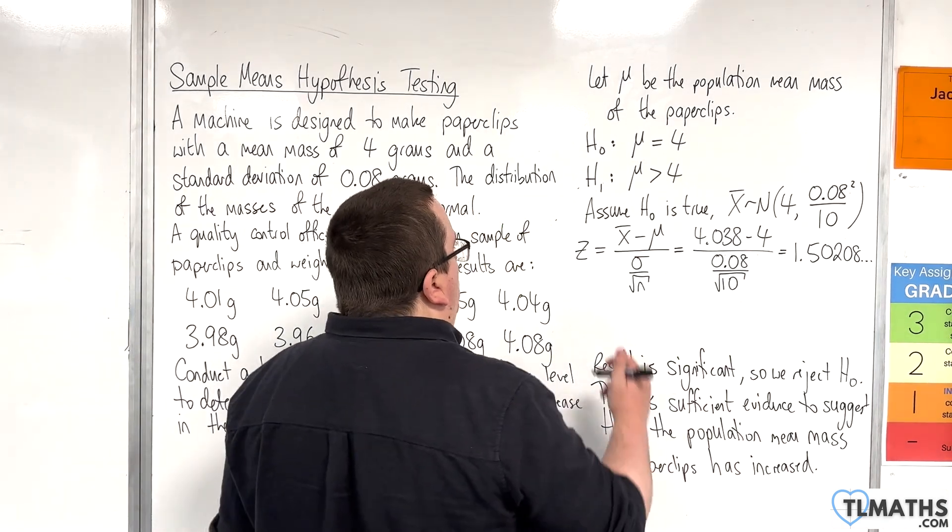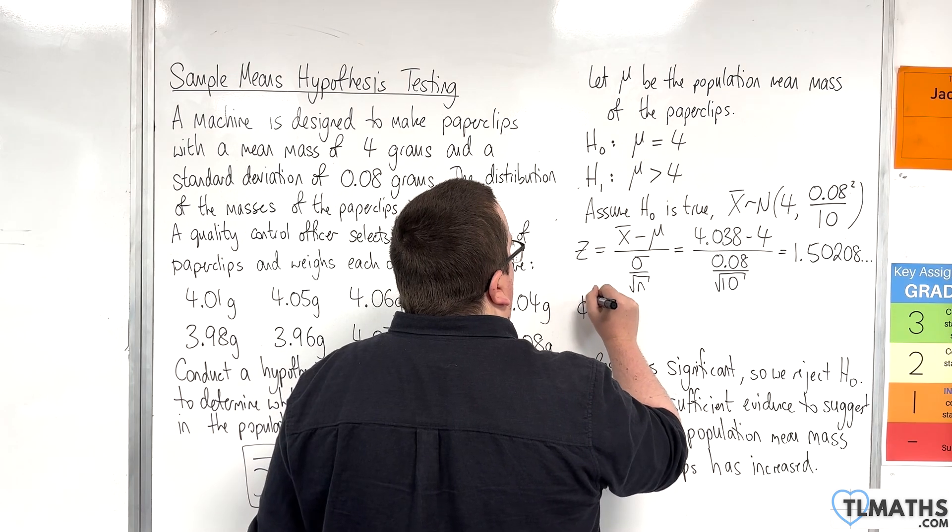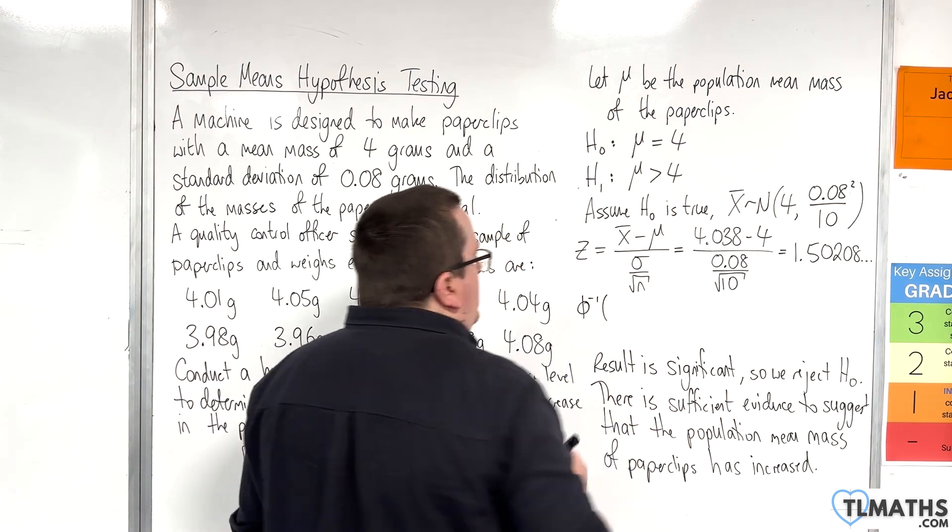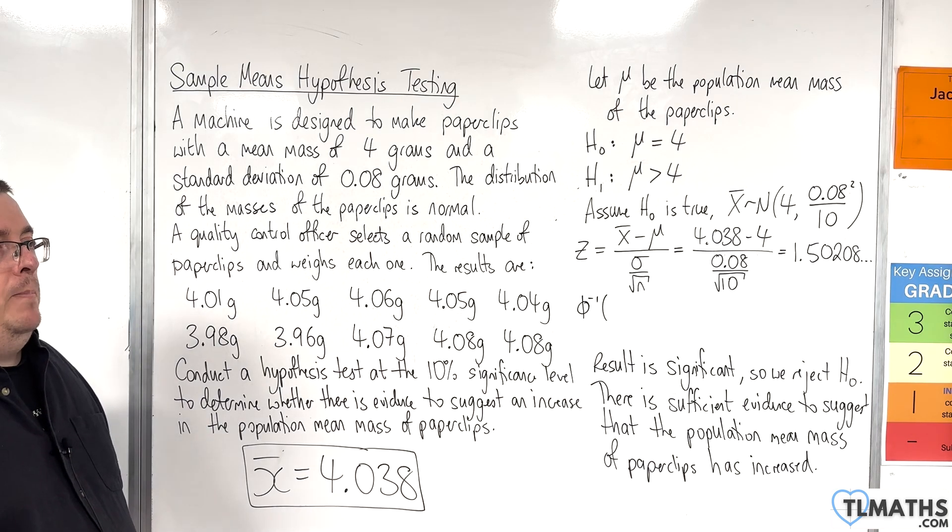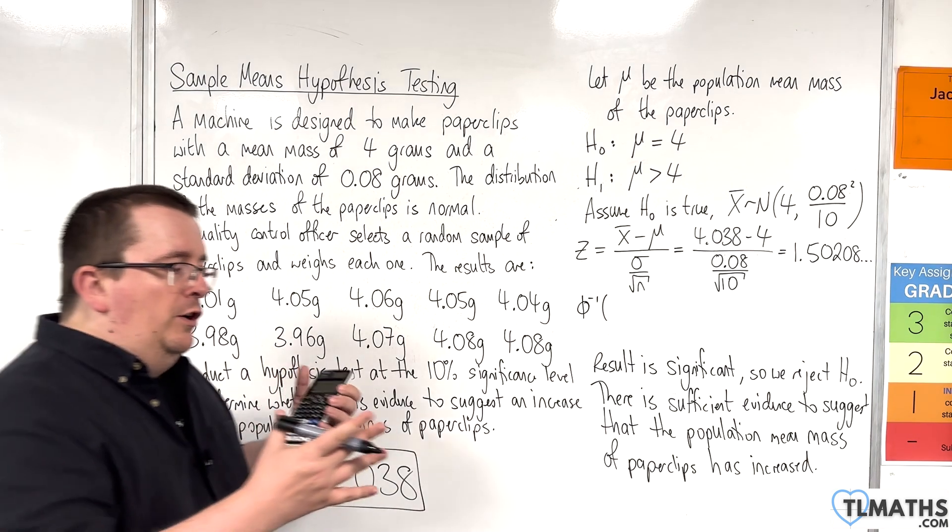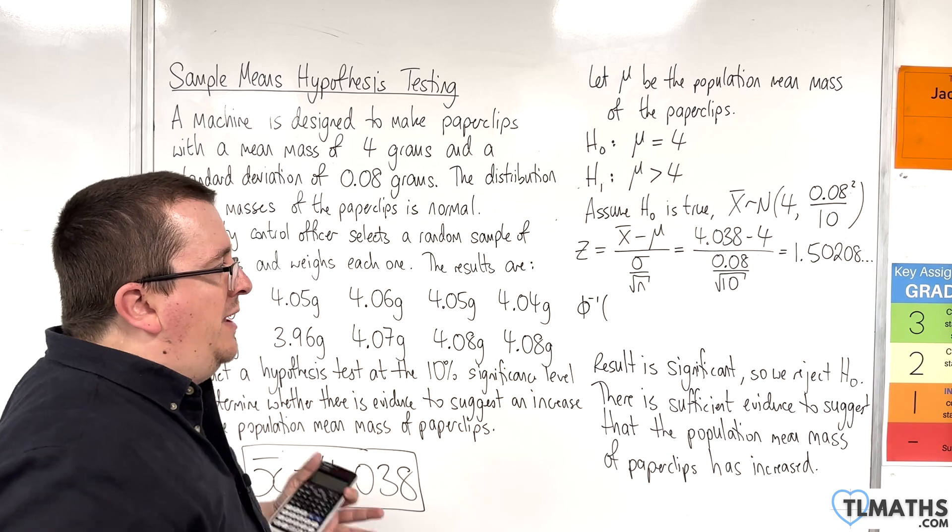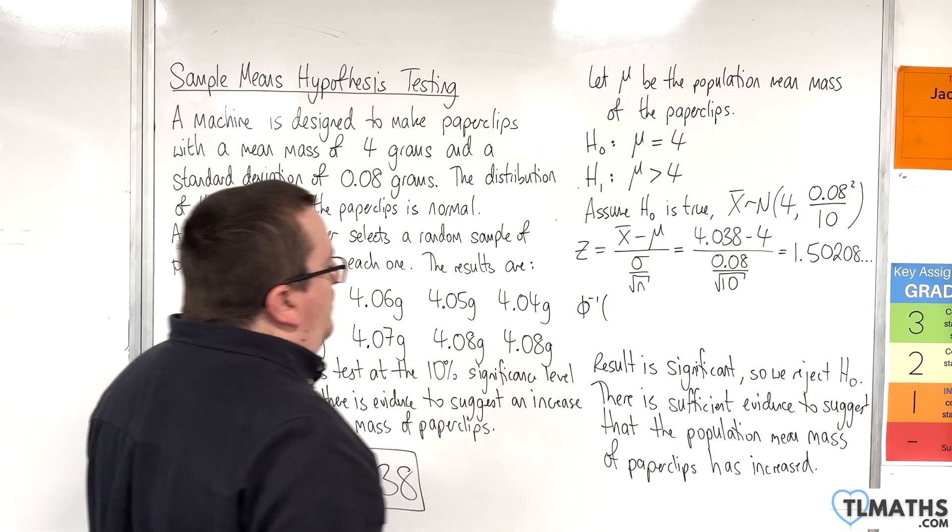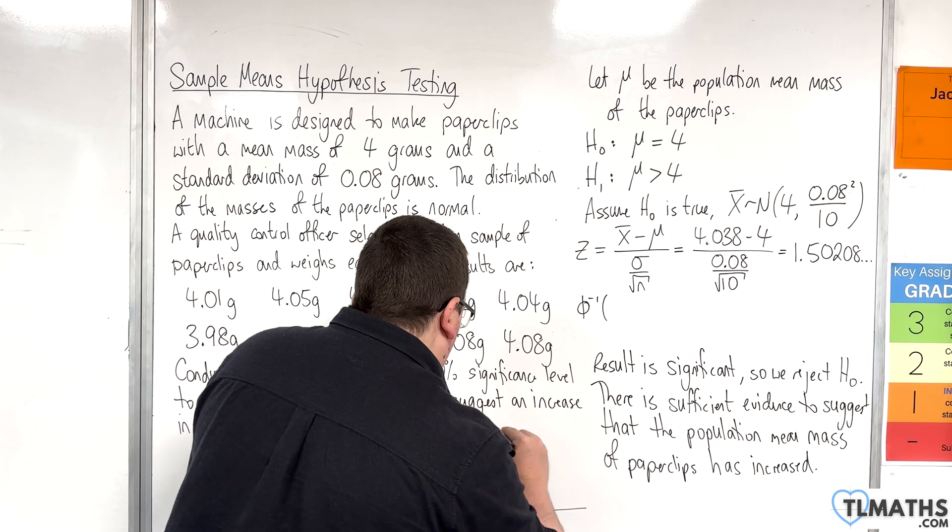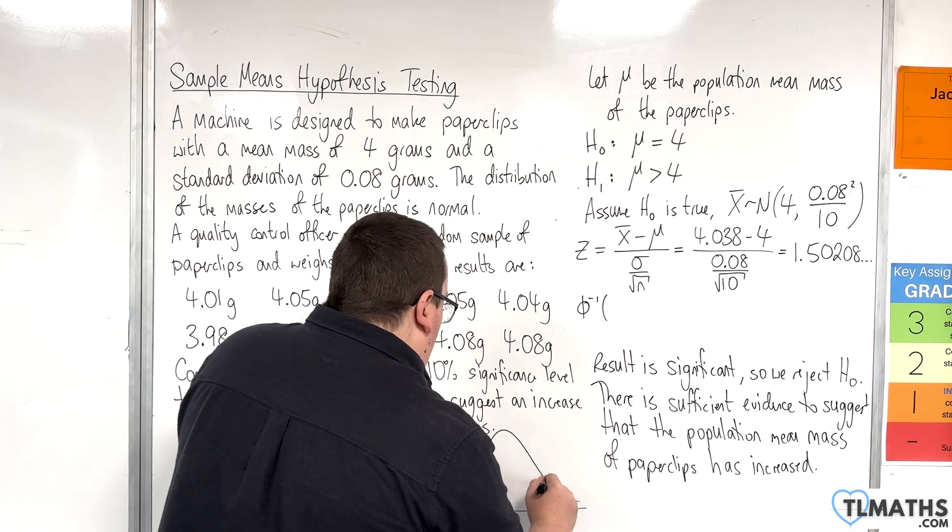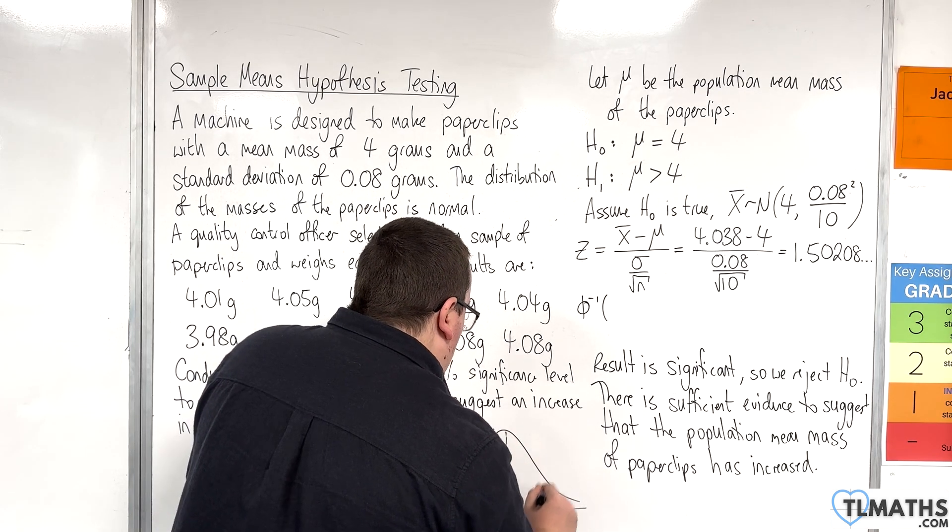Now we're using the standard normal here. Just as I had before, we're looking at the calculator because it's a 10% significance level. The value that I'm looking at, we're looking at standard normal here, so that's 0.